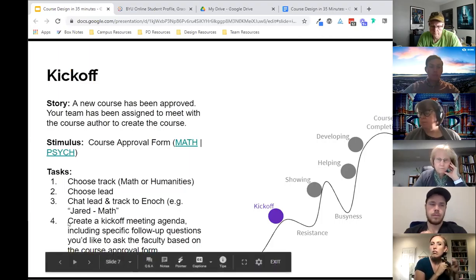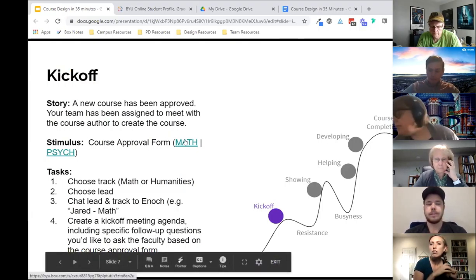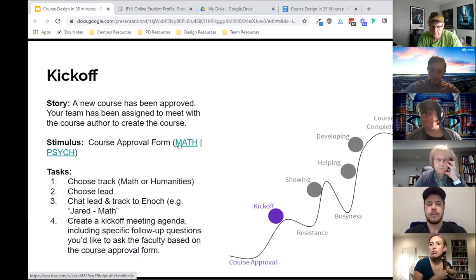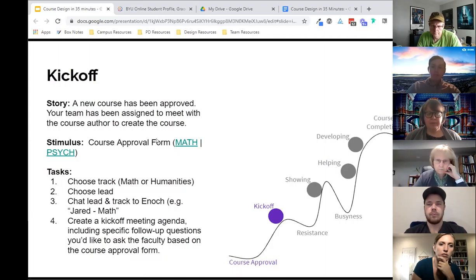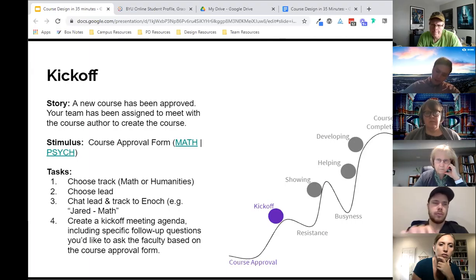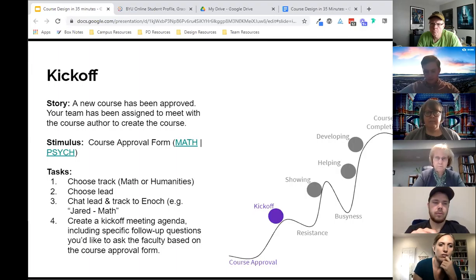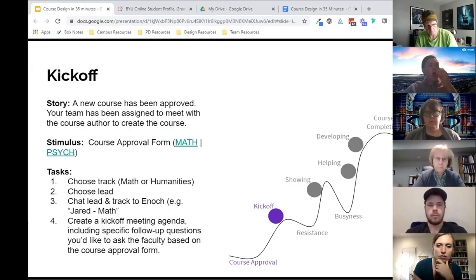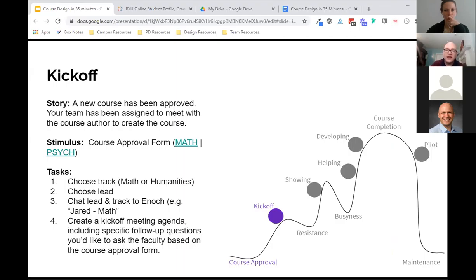And then you're going to create a kickoff meeting agenda and just kind of figure out what you want to do. And then you can use these links, these will link out to a real course approval form has been redacted a bit. But you should be able to see some information on there that will help you. So we'll go ahead into that breakout, but I want to see if there's any questions on the breakout before I split you. Any questions or confusion? All right, so Jason, if we could go ahead and start the breakout, let's give them four minutes and four minutes, you'll automatically be brought back into the big group.